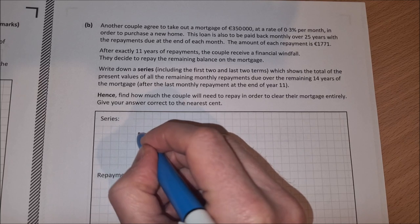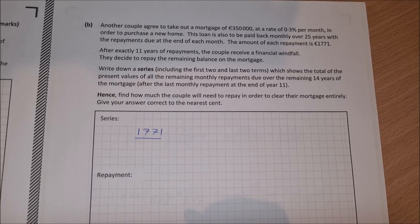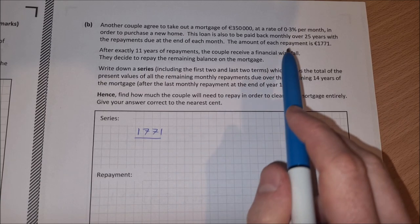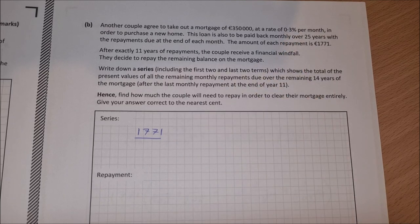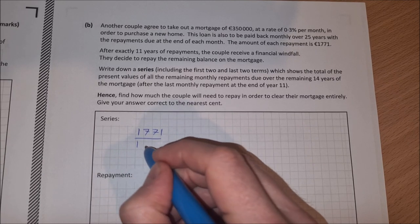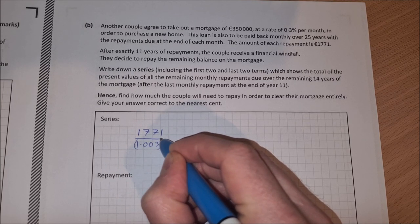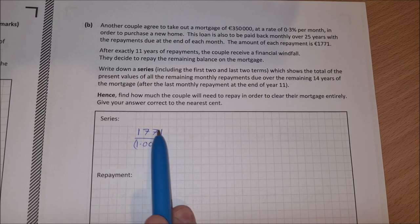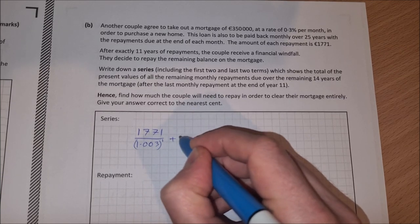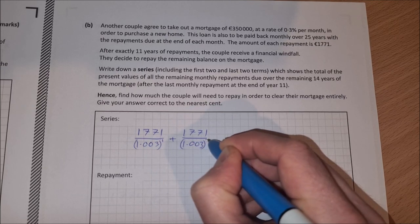The repayment amount is 1771. And to find the present value of this, you divide by the interest rate to the power of the number of compounding periods. So the interest rate is 0.3% per month, so we have to write this as 1 plus the interest rate as a decimal. So that'll be 1.003, and that's going to be to the power of 1 for the first repayment. The first repayment is made in a month's time. The second repayment then will be 1771 divided by 1.003 to the power of two because it's two months.